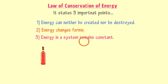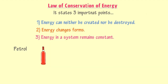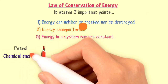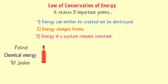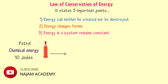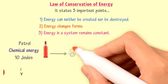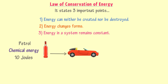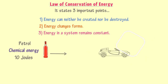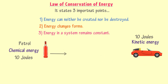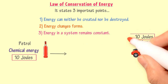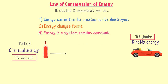To elaborate these points, consider that you have a bottle of petrol. Petrol possesses chemical energy — let this bottle have 10 joules of chemical energy. When you put this into the car's tank, the car will use this 10 joules of chemical energy to produce 10 joules of kinetic energy in the form of motion. Thus, we completely transfer 10 joules of chemical energy into 10 joules of kinetic energy without destruction or any wastage.